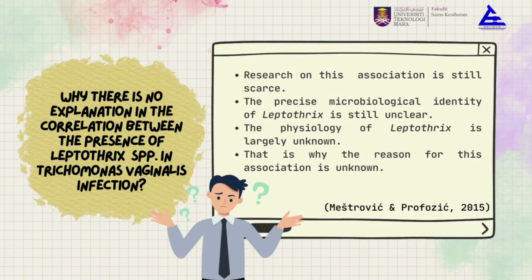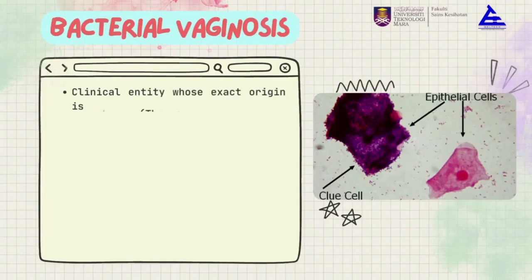Do you know why there is no clear explanation for the correlation between the presence of Leptothrix species and Trichomonas vaginalis infection? From our reading, the reason is that research on this organism is still rare, and that is why the microbiological identity and physiology of Leptothrix species is still unclear.